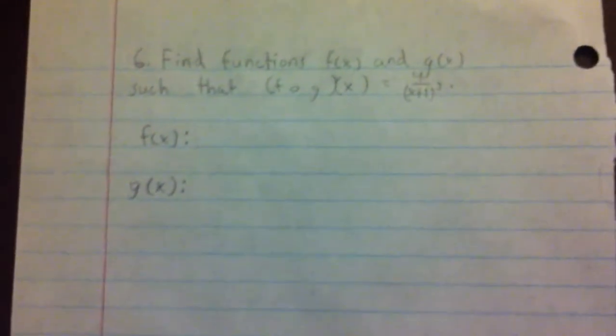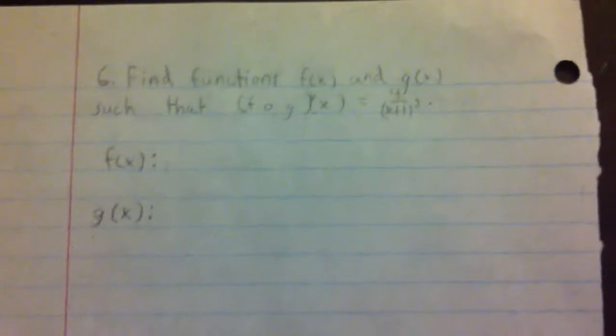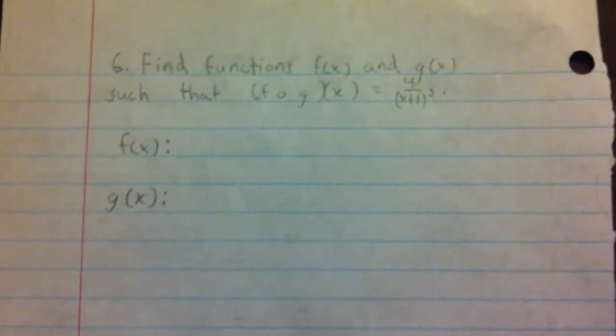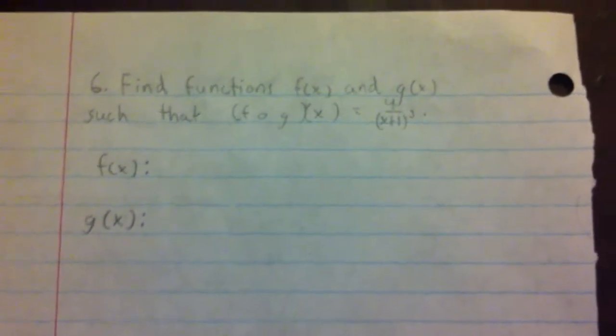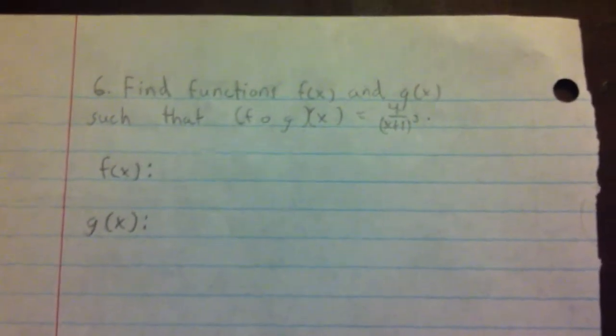Okay, so we're doing number 6 here, which I have written out. It says find the functions f of x and g of x such that f of g of x equals 4 over x plus 1 to the third.